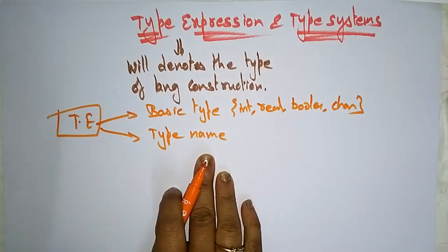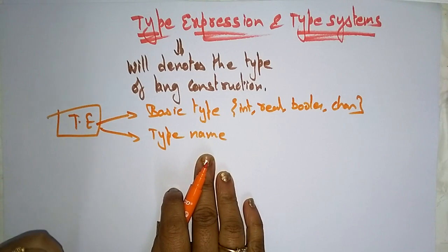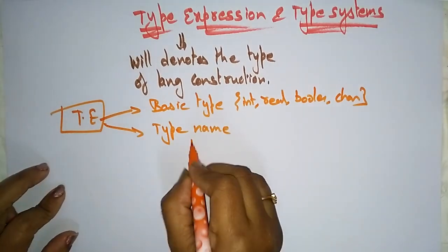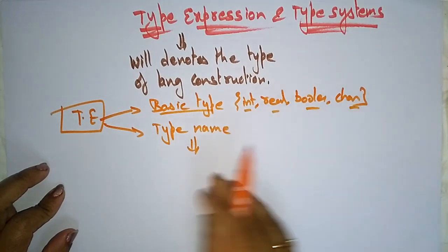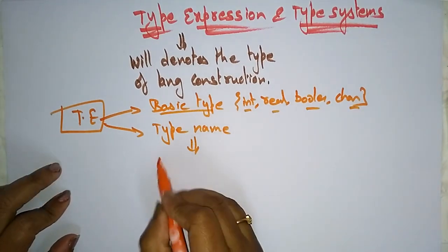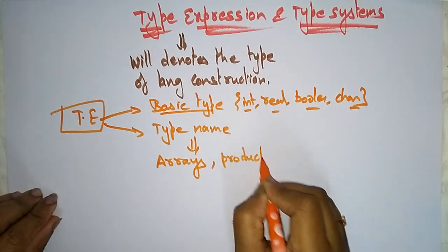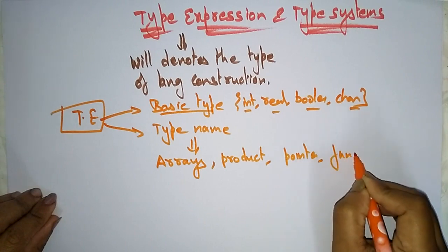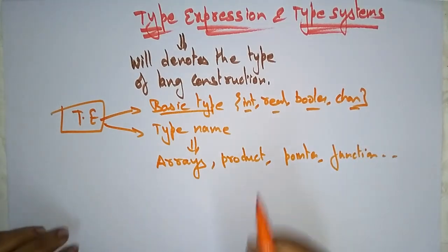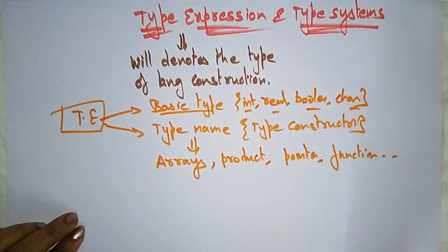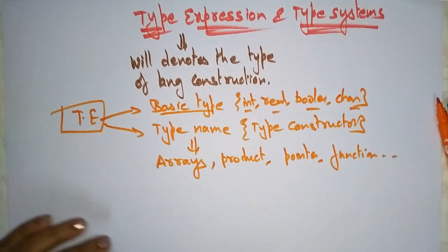A type constructor applied to a type expression is itself a type expression. The basic types include integer, real, boolean, and character, whereas the type names include arrays, product, record, pointer, and function. These type names are also referred to as type constructors. So type expressions may be a basic type or a type name.